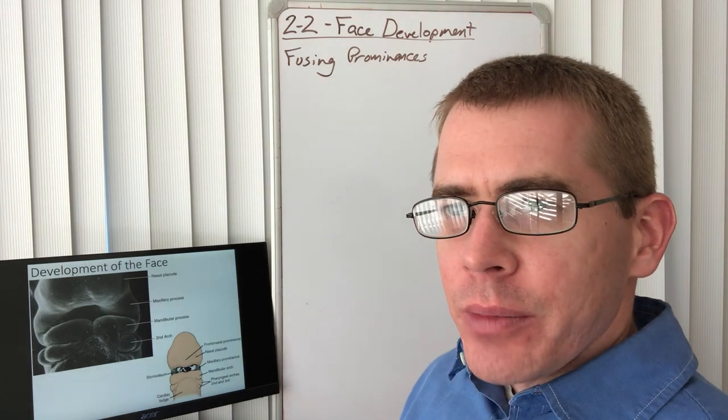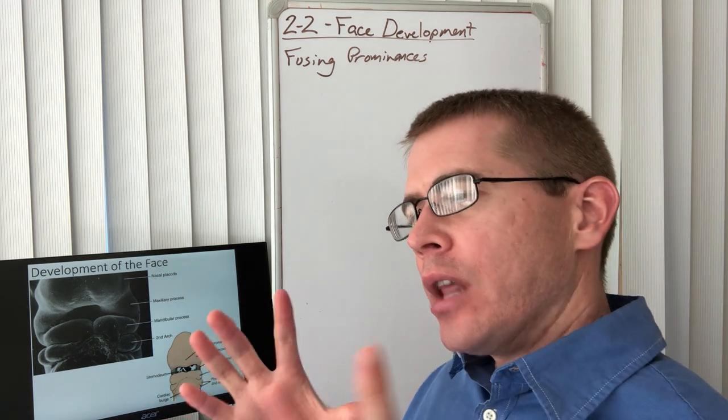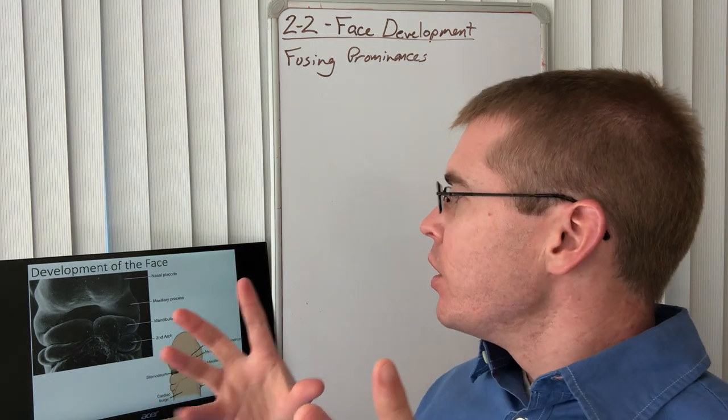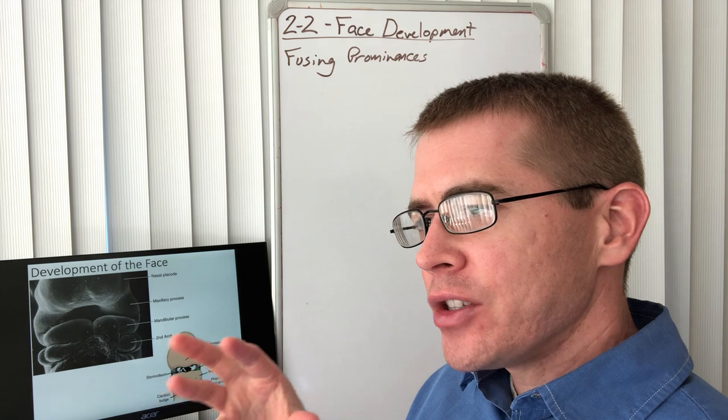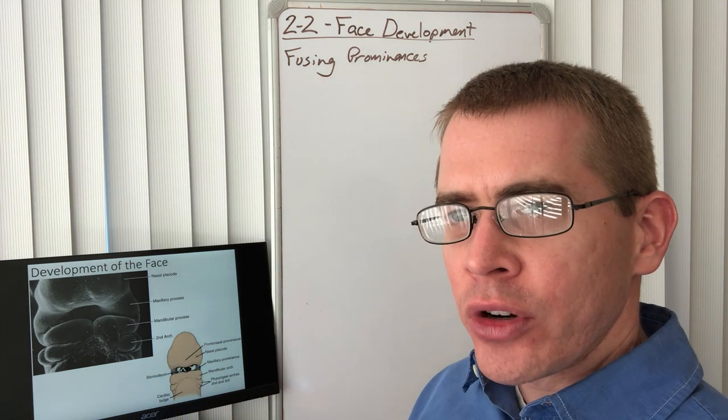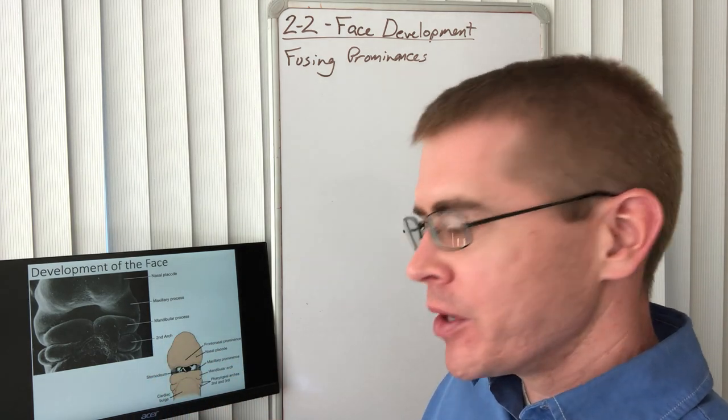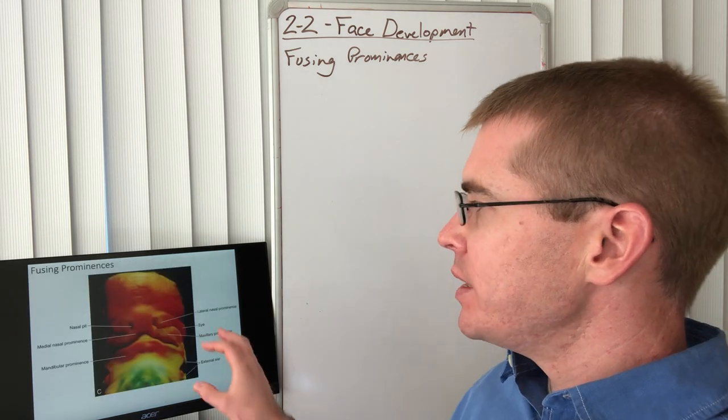I fooled you. Let's talk about facial development real quickly. Like in the previous lecture, the development of the face is all about these prominences, the frontonasal prominence, the maxillary prominence. Let's move into these in detail.